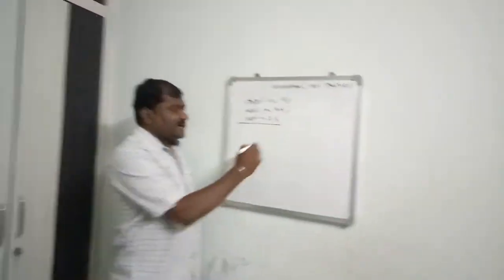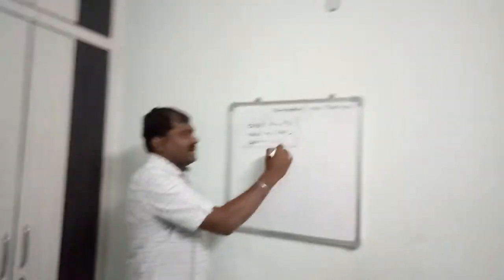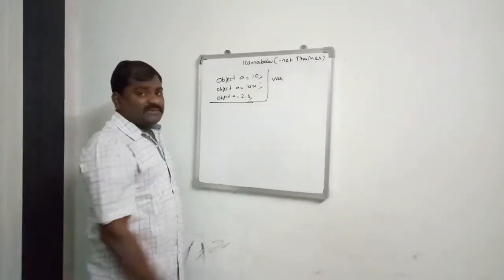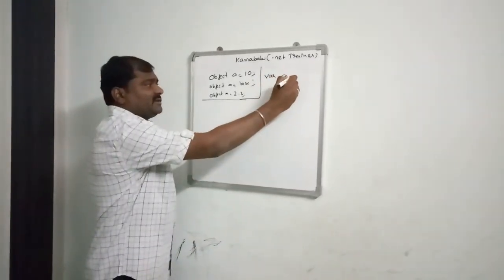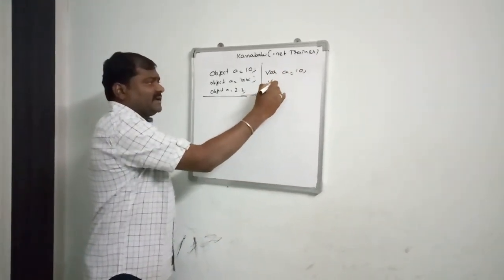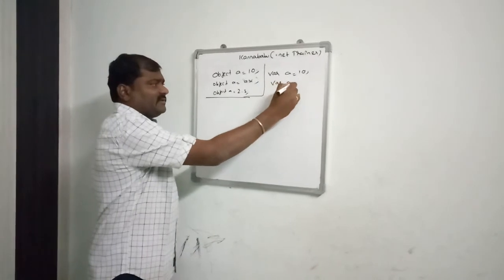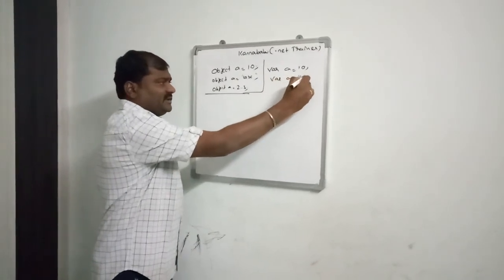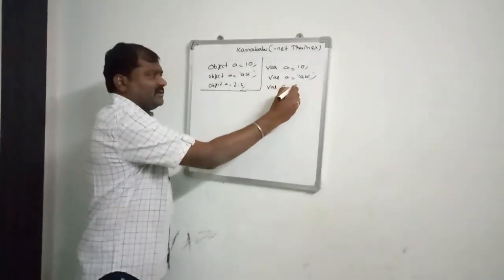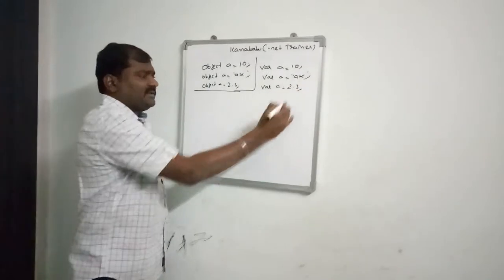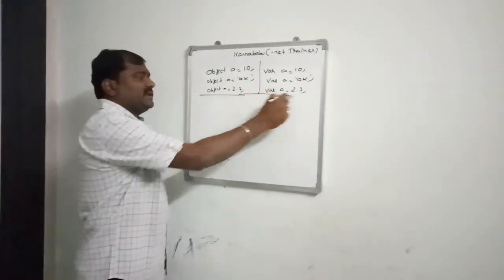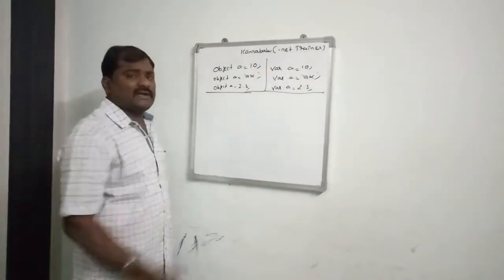Similarly, there is one more data type called var. Var is called an anonymous type. Var a = 10 — valid. Var a = 'abc' — valid. Var a = 2.3 — valid. So we can store any type of value in var as well.